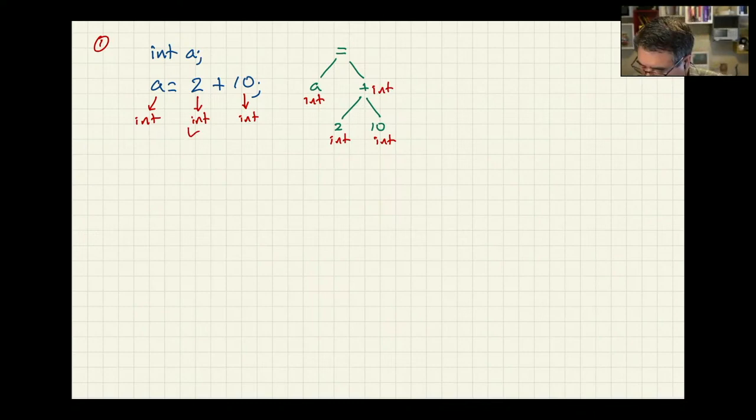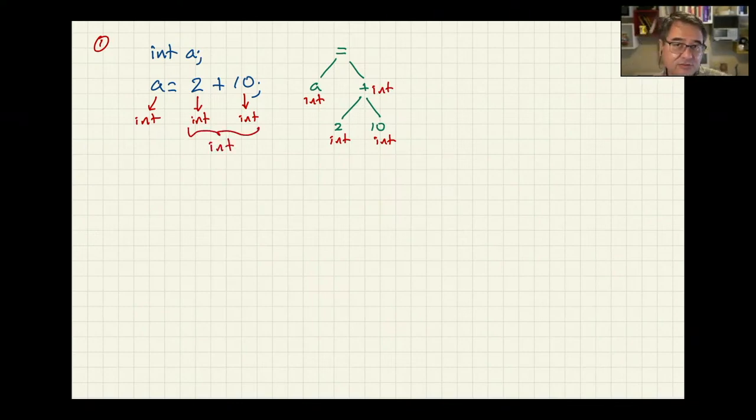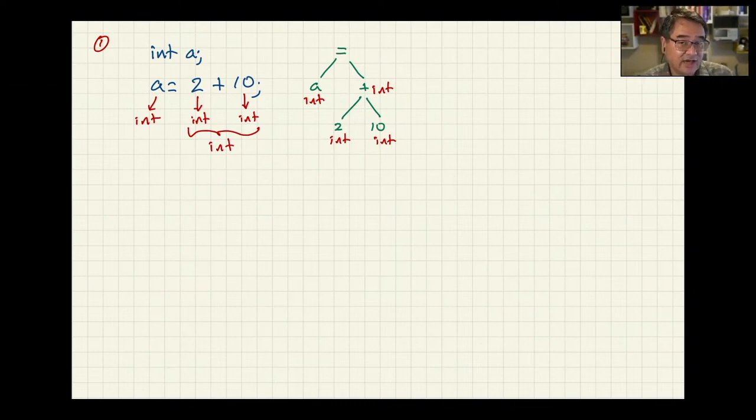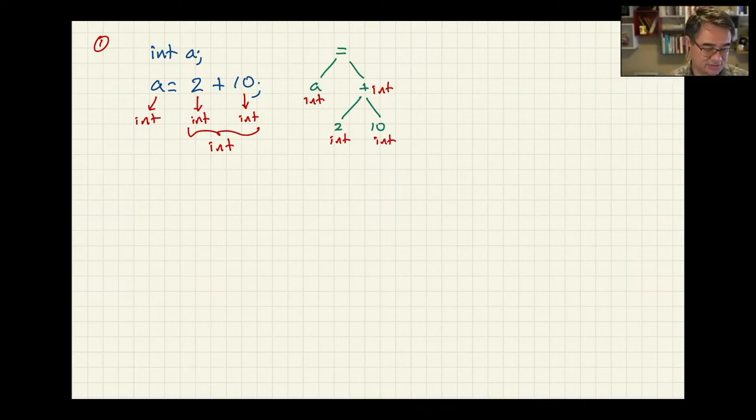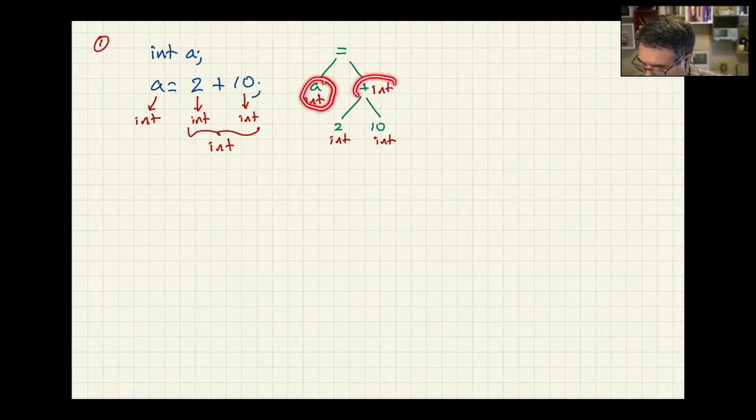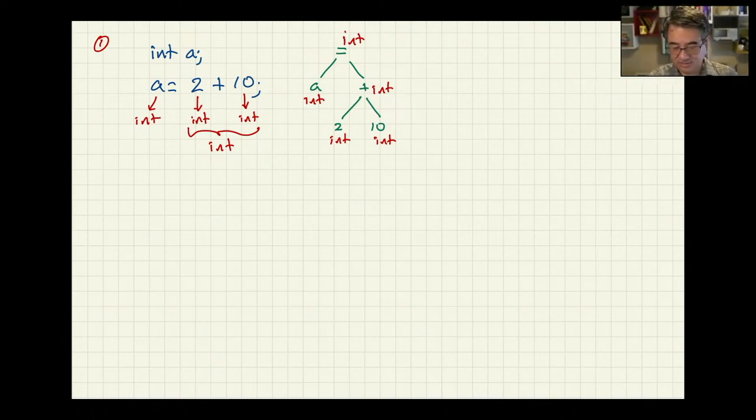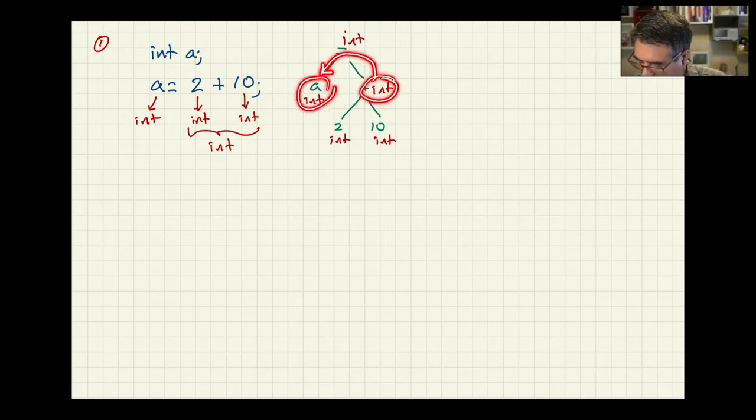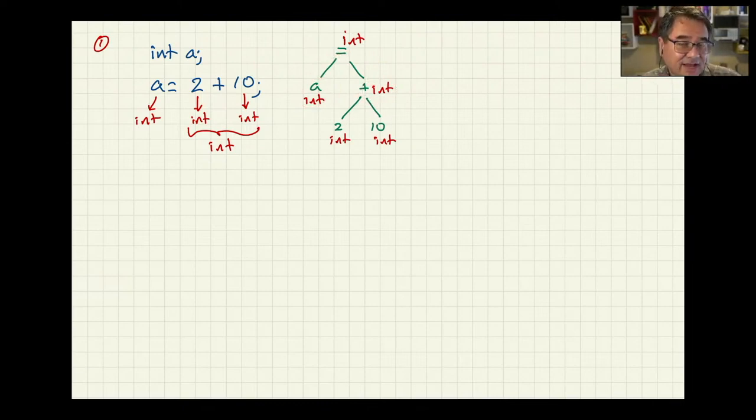So now it knows that the result of adding these two things together is going to be an integer. It doesn't necessarily know at this point what the value is, but it knows it's going to be an integer. Because when you add two integers together, you are going to get an integer. You can't get a float. You can't get a string. You can't get a Boolean out of that. You're going to get an integer. And now it knows that a is an integer, and the result of the plus is an integer. So now it knows that the result of the assignment is also going to be integer. And this is good, because now we're taking an integer, and we are copying it over into a variable that's also an integer. And so this passes the test, right? This is going to compile, and this is going to work. This is going to run. So the type of the thing on the right is the same as the type of the thing on the left. And so we know this assignment is going to work.